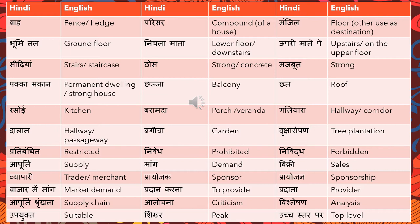'Bagicha' means garden. 'Vriksharopan' means tree plantation — 'vriksh' means tree. 'Pratibandit' means restricted — 'yeh vastu pratibandit hai' means this is a restricted item. 'Nishet' means prohibited or forbidden. These are two different variations expressing a similar meaning. 'Apurthi' means supply, 'maang' means demand, 'vikri' means sales, and 'vyapari' means trader or merchant.